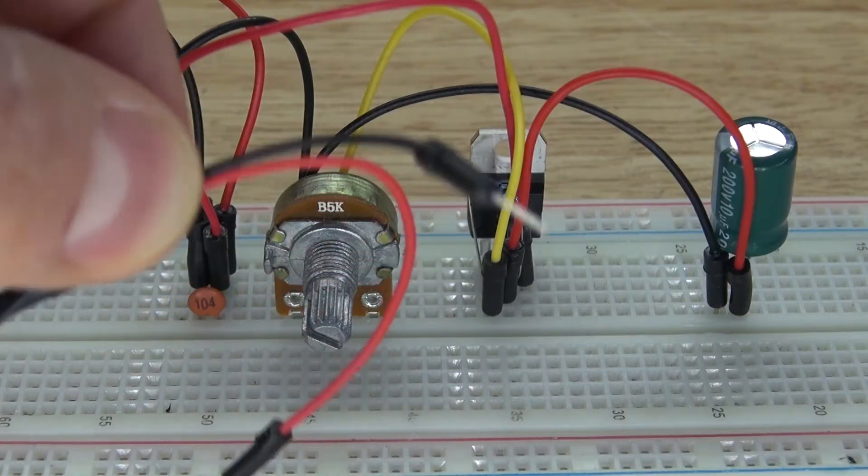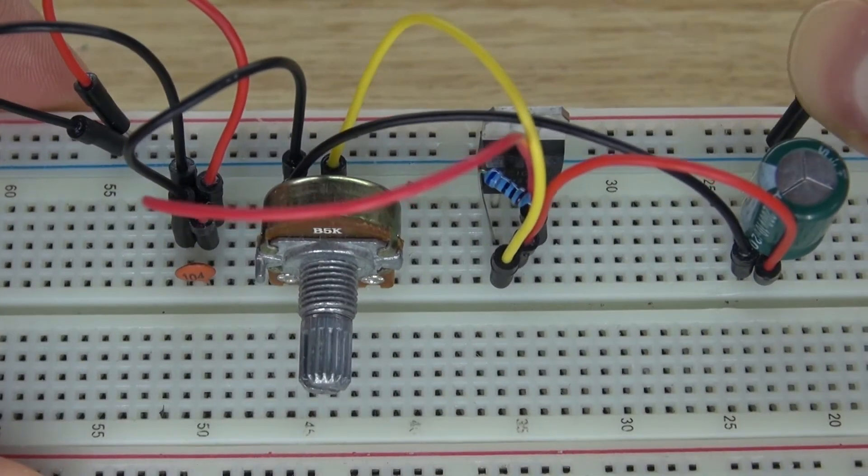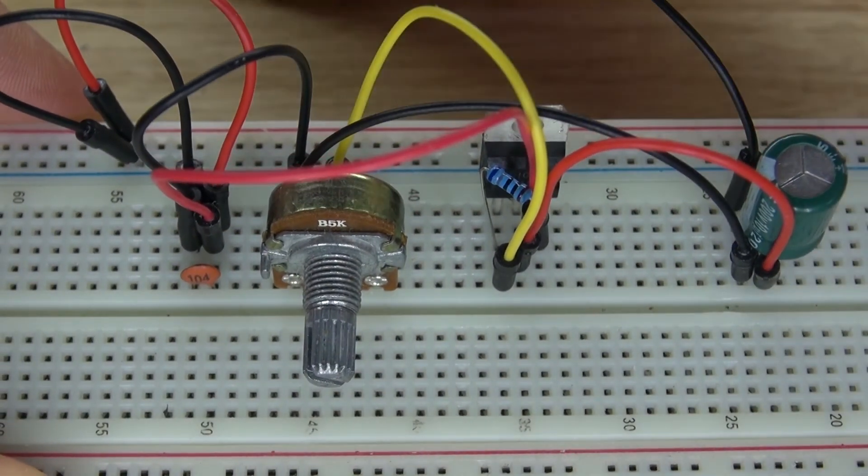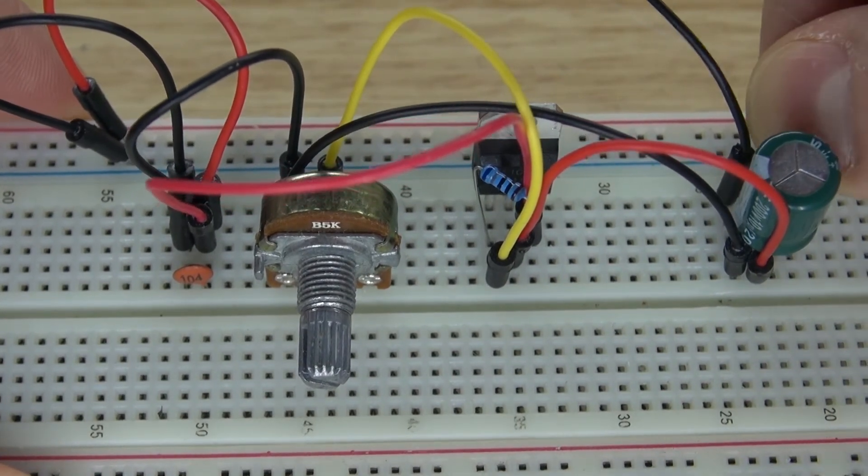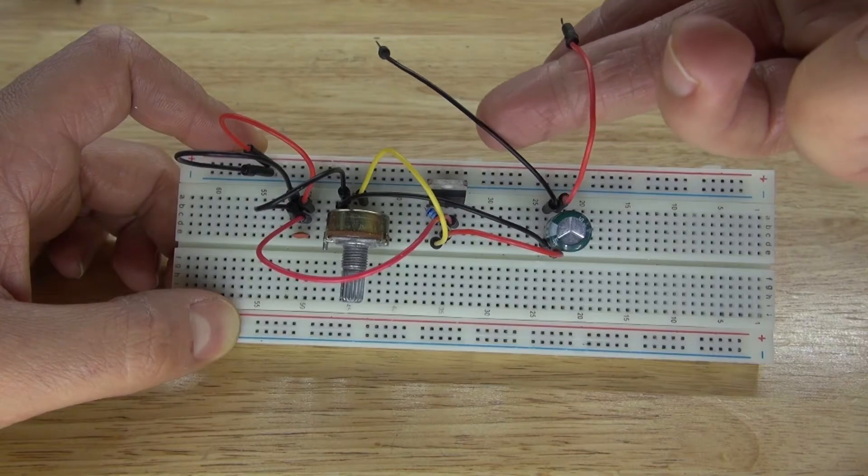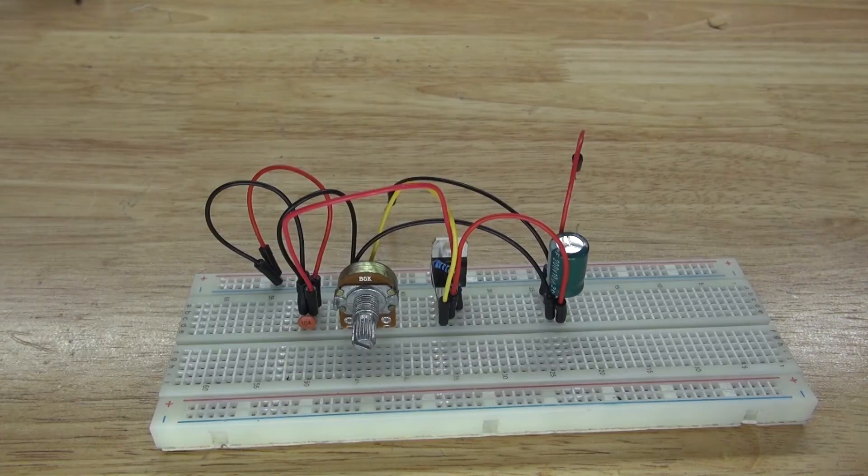Next, I'm going to take this positive and negative jumper cable and connect that to the positive and negative of my electrolytic capacitor, and that will be my output. There we go. Just like that. And leave the wires loose.